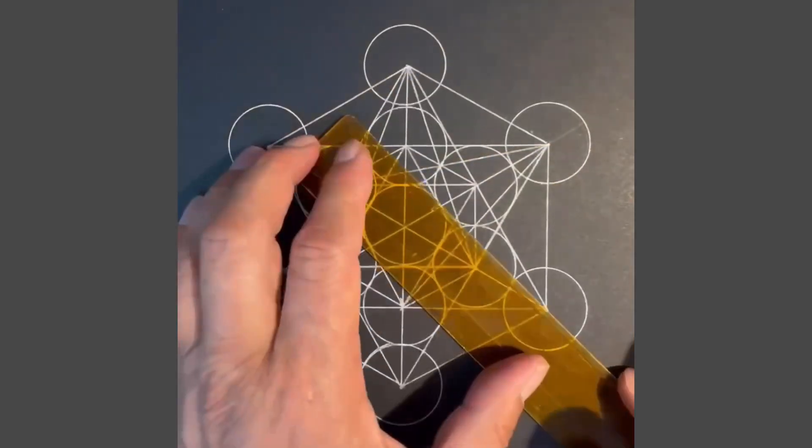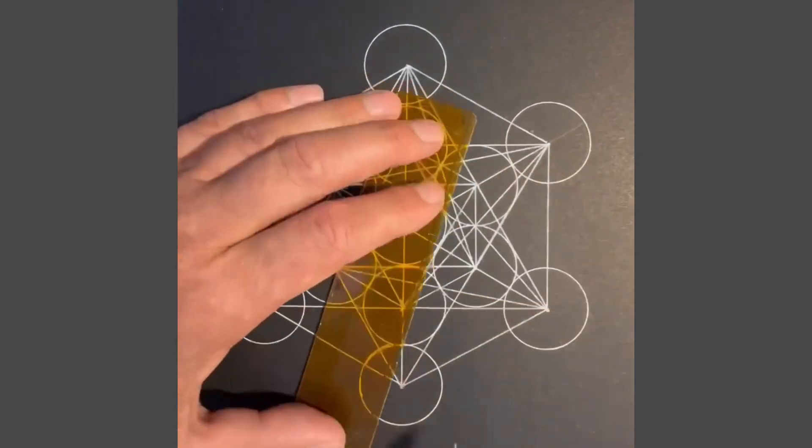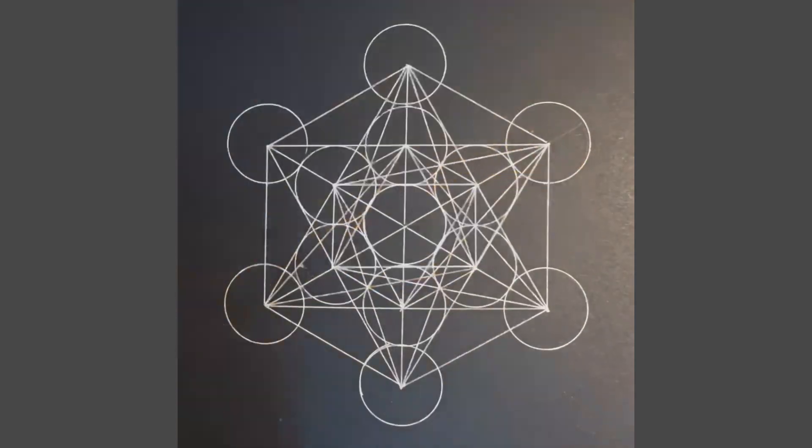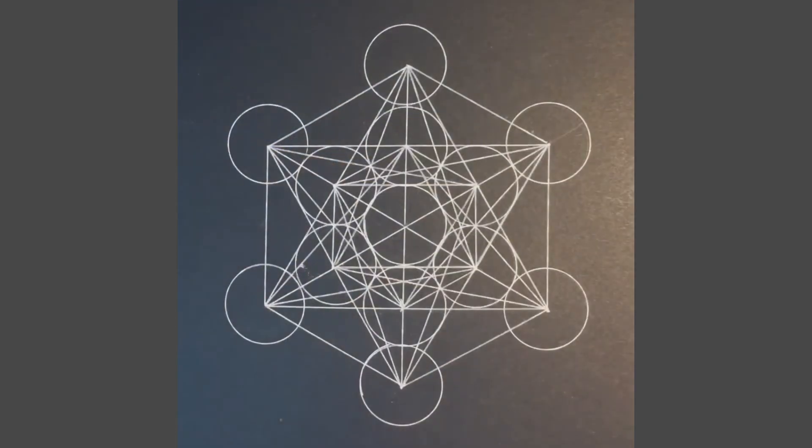Then you connect the other two parts to create another triangle from each one of the circles, so each circle meets the center of each other circle and then you have it.